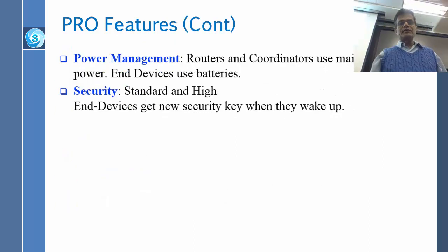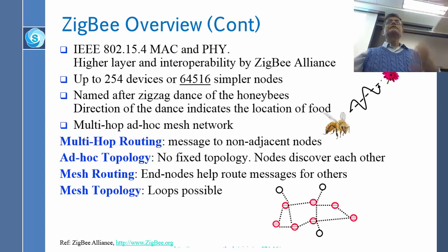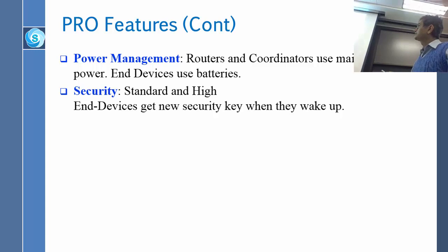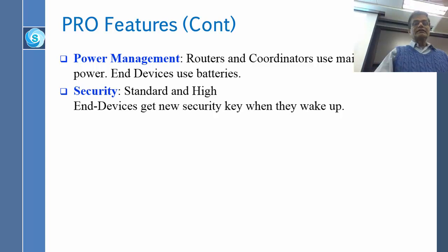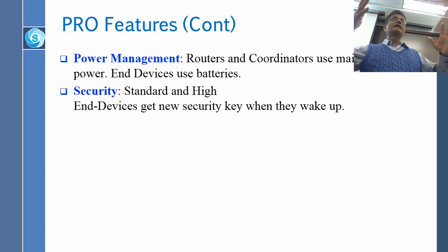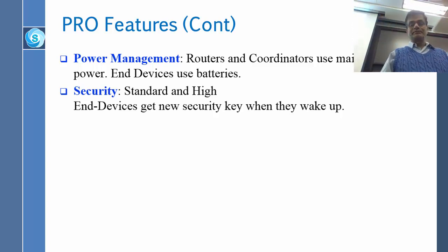Security: Zigbee has two levels — standard security and high security. End devices can get a new security key every time they wake up, which is a lot of work but is an available feature. The data can be encrypted if needed, but it doesn't have to be.